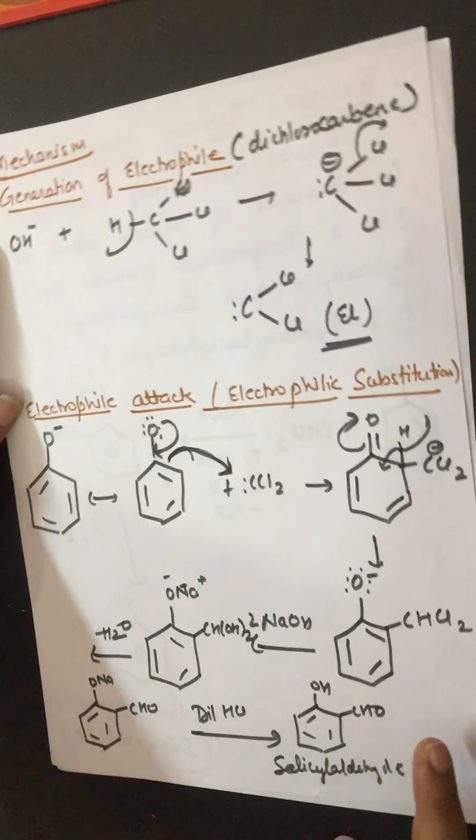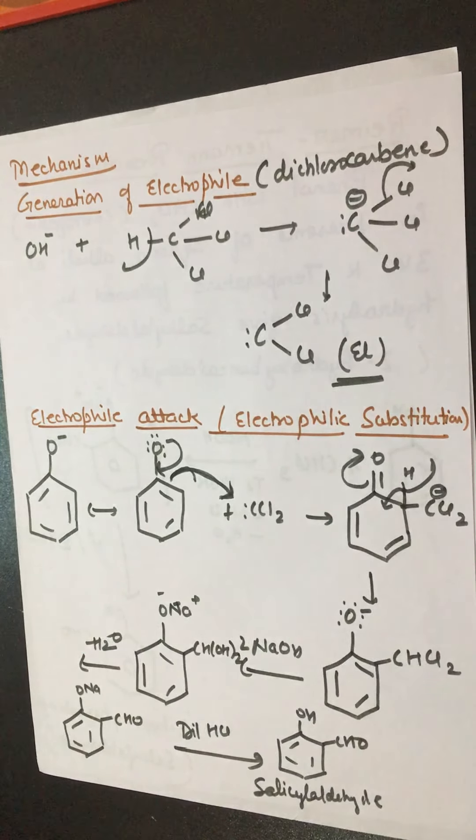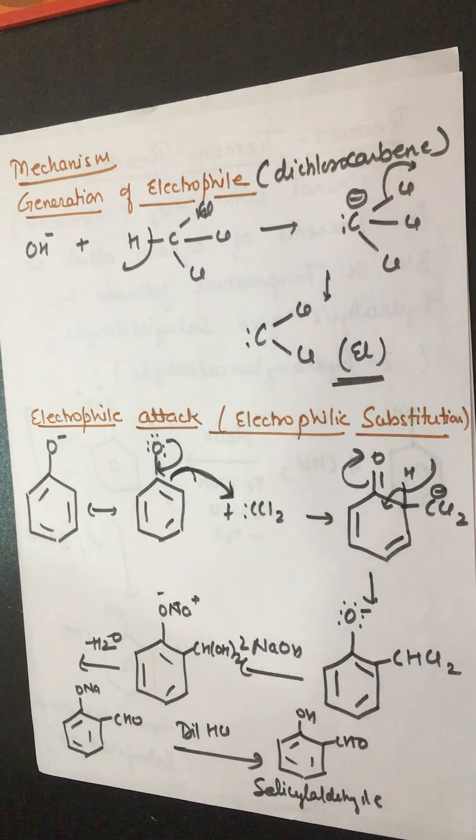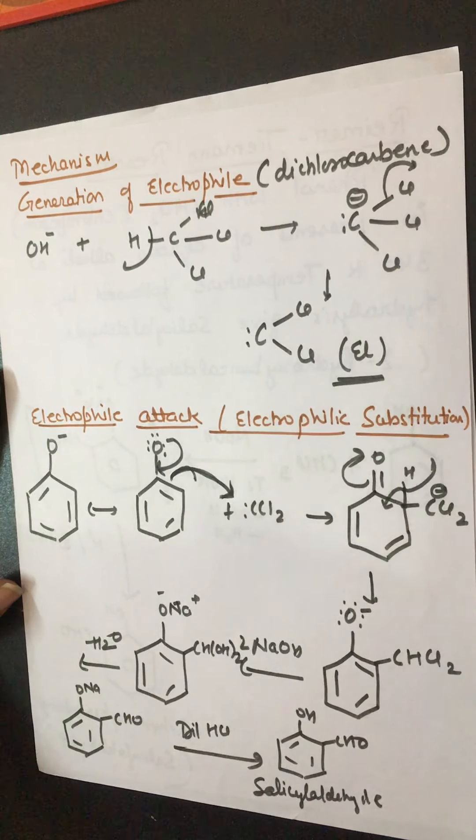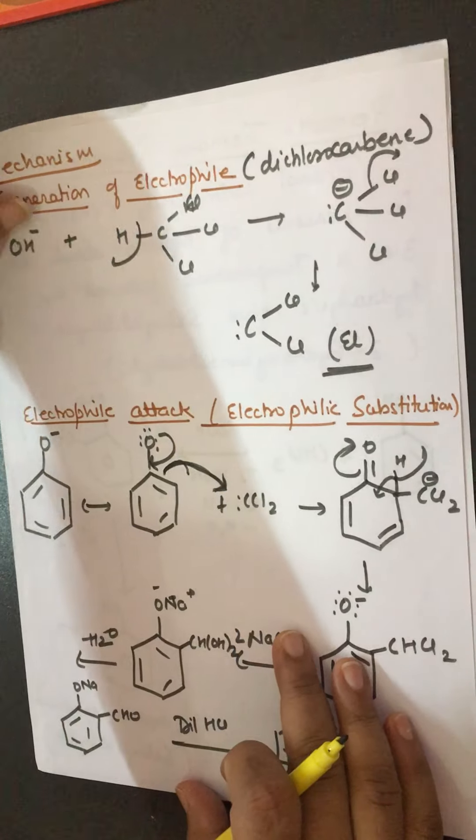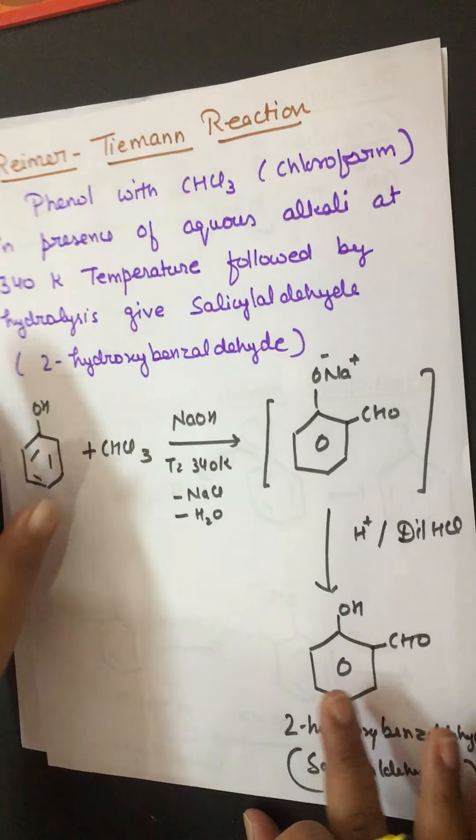It was the mechanism of Reimer-Tiemann reaction, and it is asked what is the intermediate during the Reimer-Tiemann reaction. You must know that it is dichlorocarbene, and dichlorocarbene acts as electrophile because its octet is not complete. The electrophile will attack on the phenoxide ion, and then electrophilic substitution takes place, and finally salicylaldehyde will form.